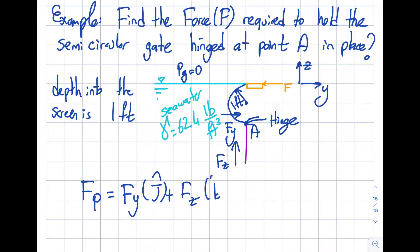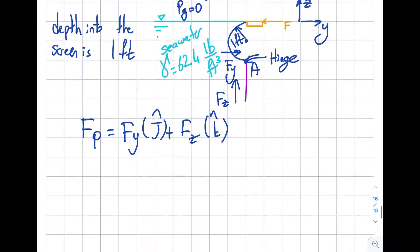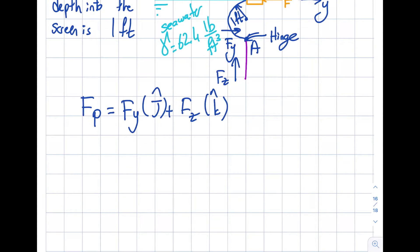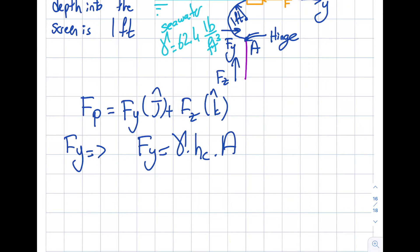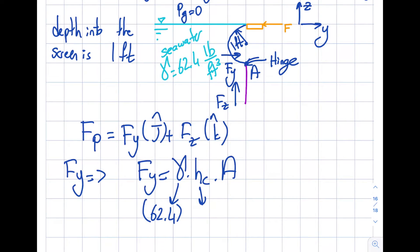My goal is to find Fy and its center of pressure, and also Fz and its center of pressure. Let's start with Fy. To find Fy I simply compute specific weight times hc times area. The specific weight is 62.4 lb/ft³.